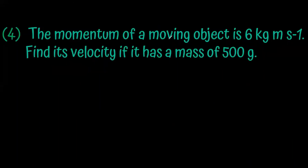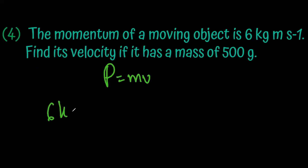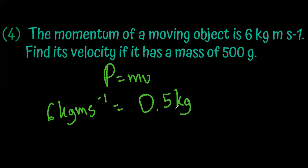The momentum of a moving object is 6 kg·m·s⁻¹. Find its velocity if it has a mass of 500 grams.